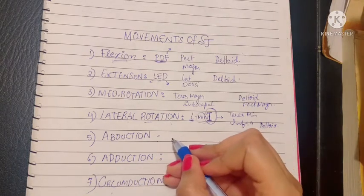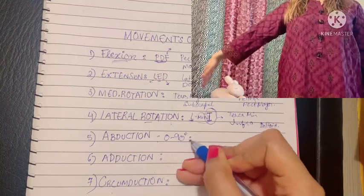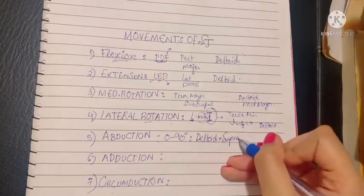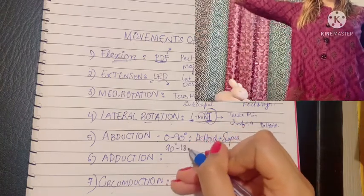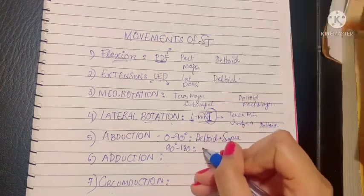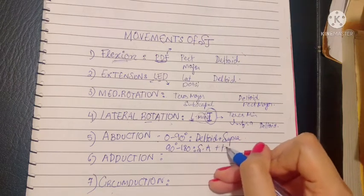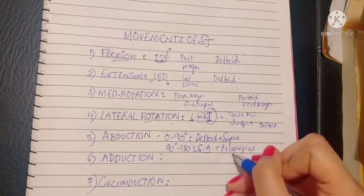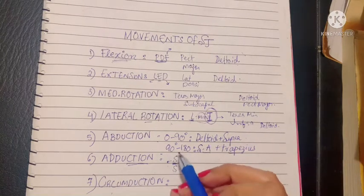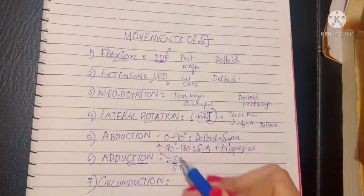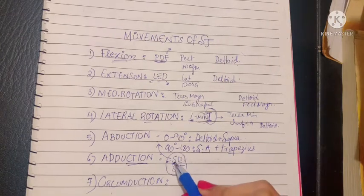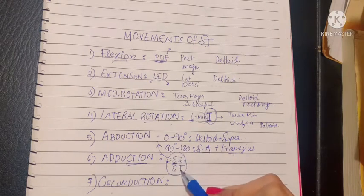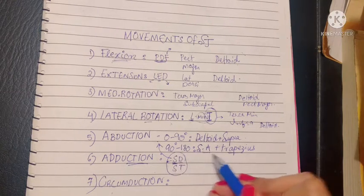Abduction is carried out as follows: 0 to 90 degrees abduction is done by the deltoid accompanied by supraspinatus, while 90 to 180 degree motion is done by the serratus anterior muscle and the trapezius. The mnemonic for abduction is SDST: S for supraspinatus and deltoid causing 0 to 90 degrees, while ST (serratus and trapezius) do the 90 to 180 degrees.